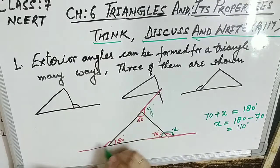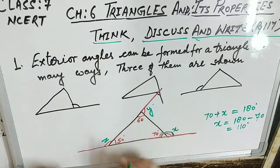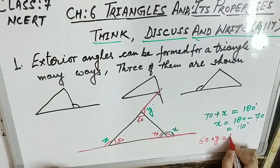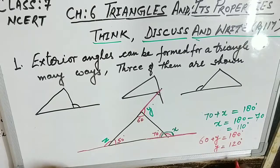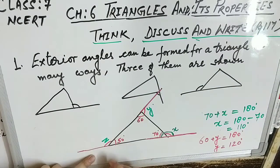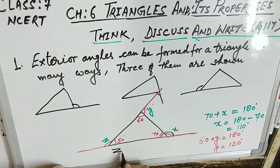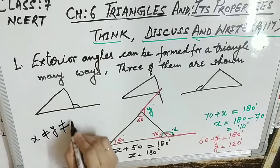Now suppose y is the exterior angle at the 60° vertex. This is also a linear pair, so 60 + y = 180°, giving y = 120°. So x is not equal to y. Similarly, at the 50° vertex, z + 50 = 180°, so z = 130°. Therefore x ≠ y ≠ z, meaning the exterior angles formed at each vertex of a triangle are not equal.